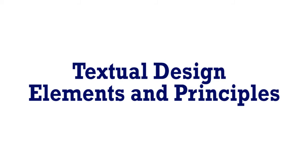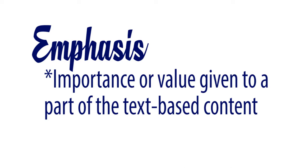Now, how do we produce text information and media? What are the design elements and principles of text information and media? These are what we should follow when producing text information and media to make it more effective for our audience. First is emphasis — the importance or value given to a part of the text-based content. We give importance by making the text bold, making it larger, or providing a different color. How your audience receives the information will be based on how you give emphasis on the text.